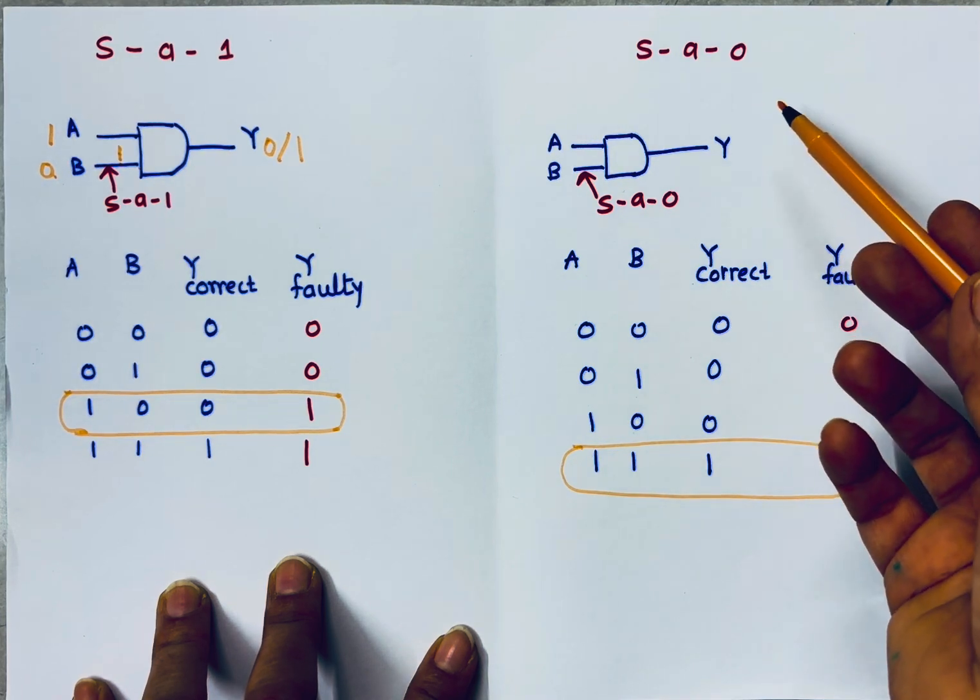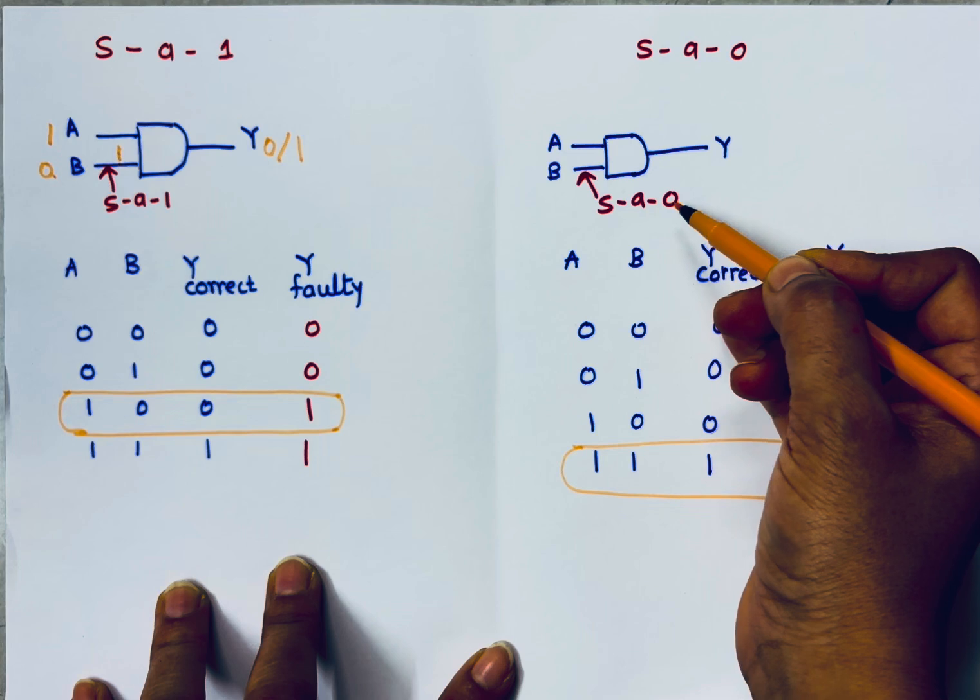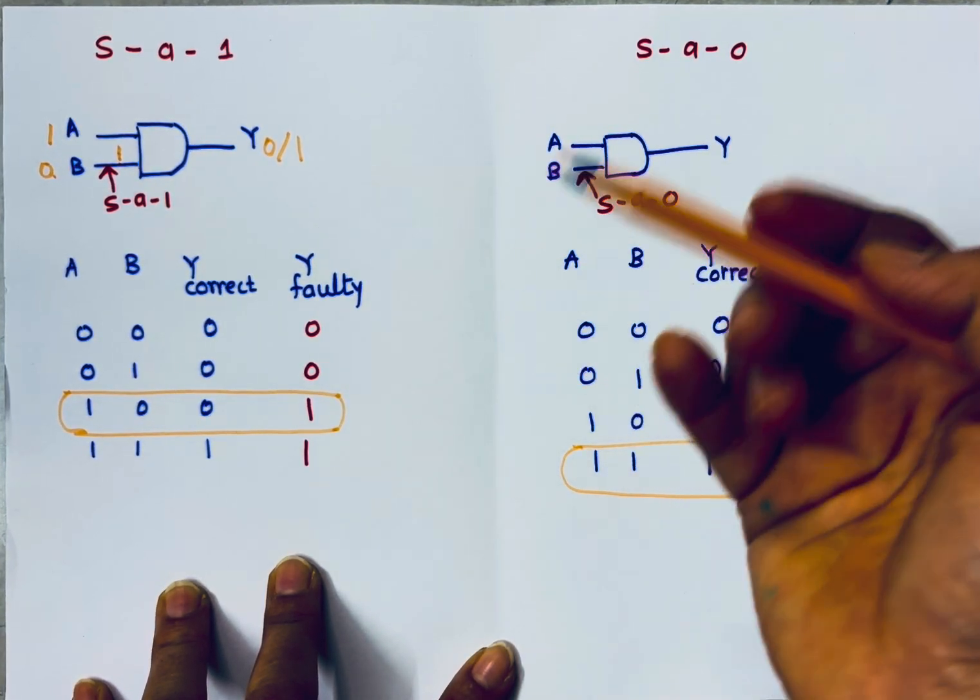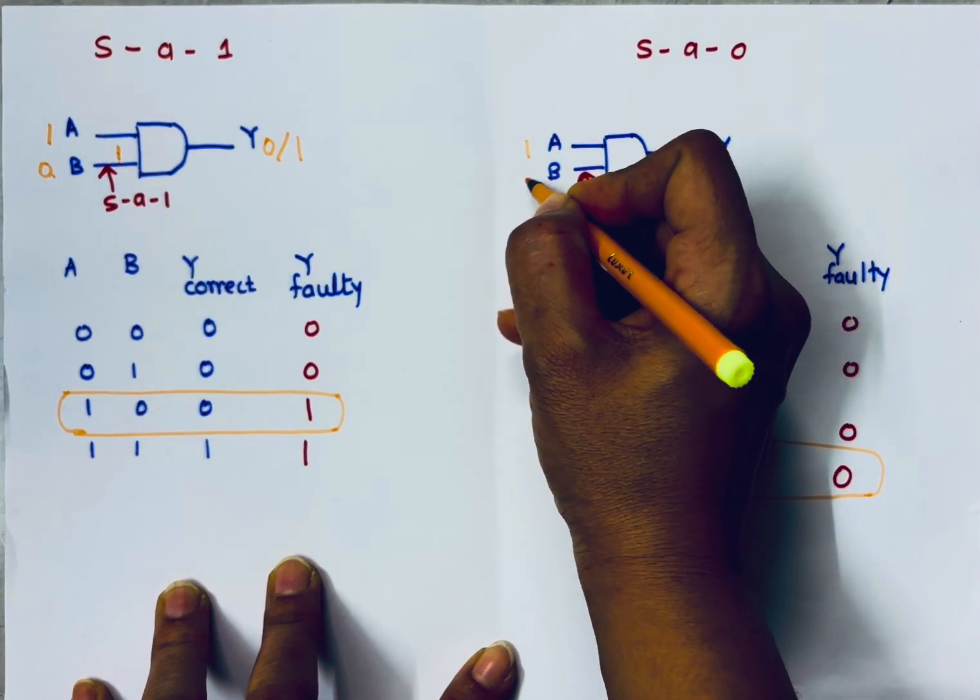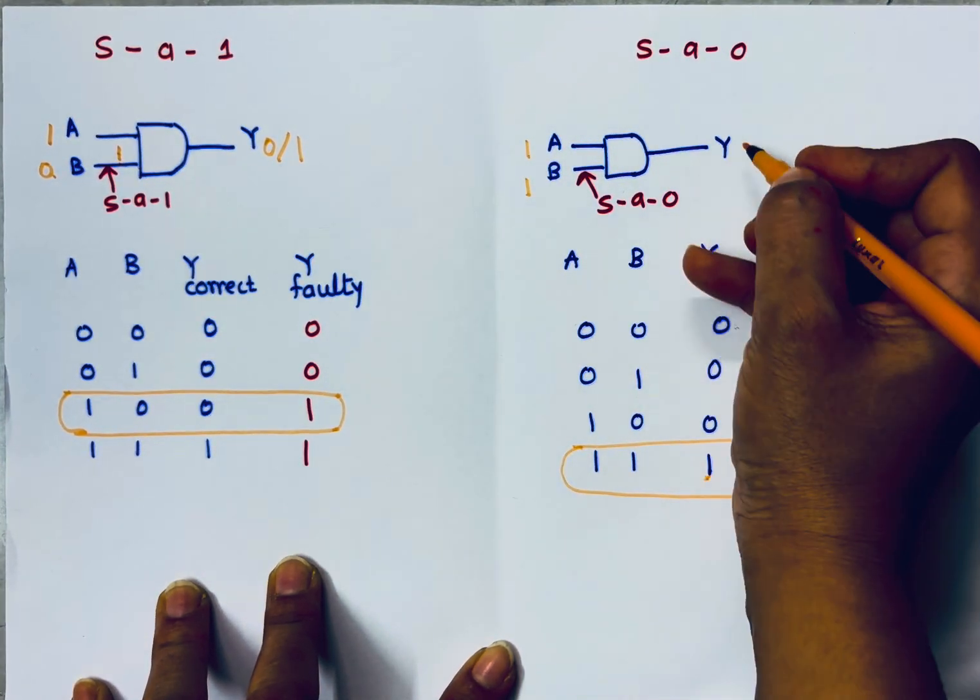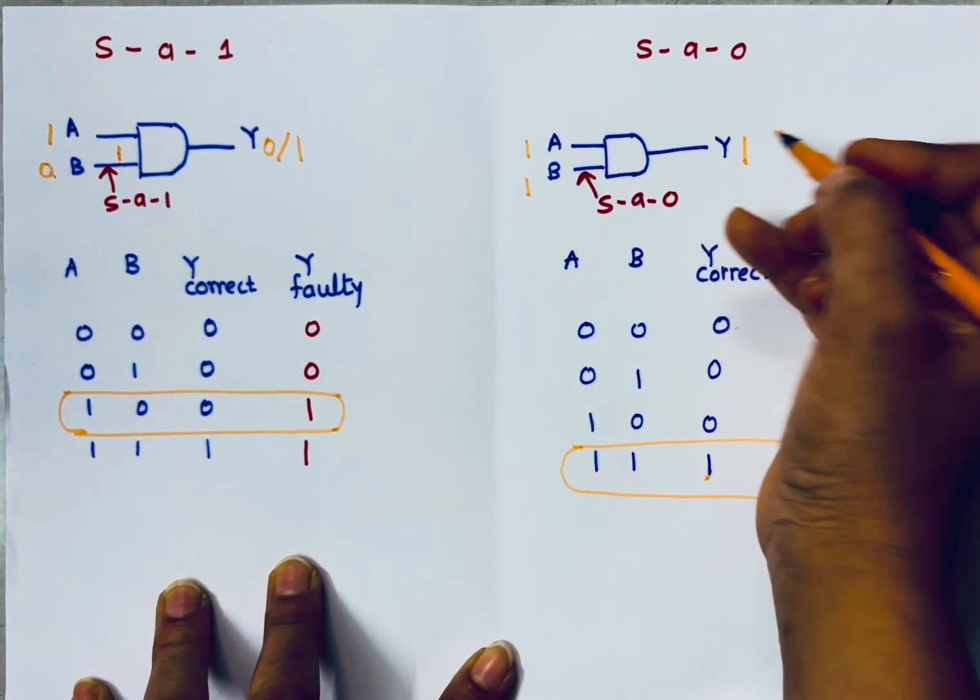Similarly, for stuck at 0, let's assume again input B is stuck at 0. If it is stuck to 0 and if I will apply input 1,1, for 1,1 what I should get? I should get output as 1 because in AND gate when both inputs are 1, output is 1.